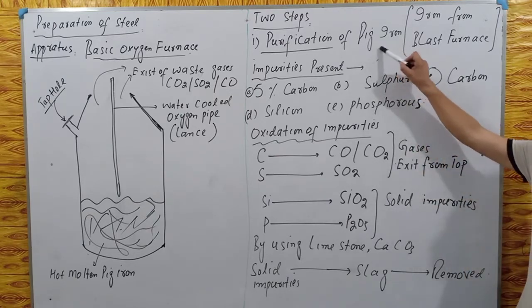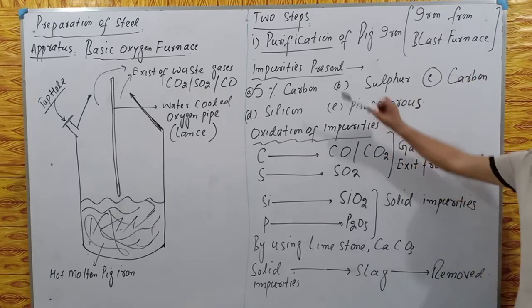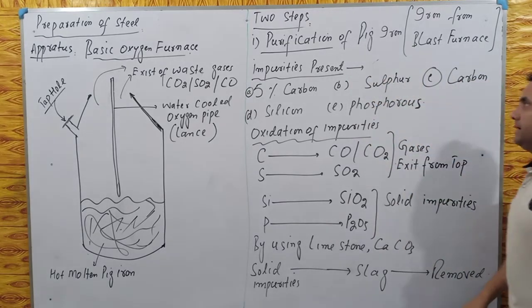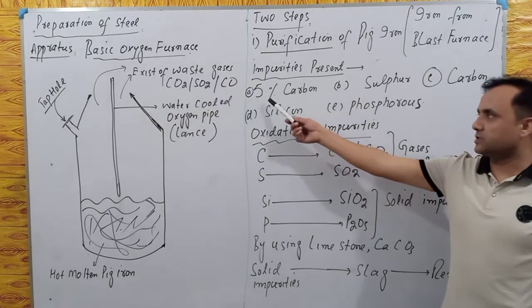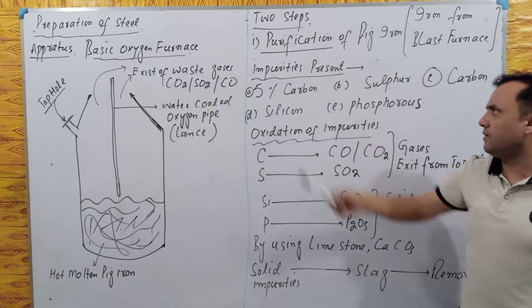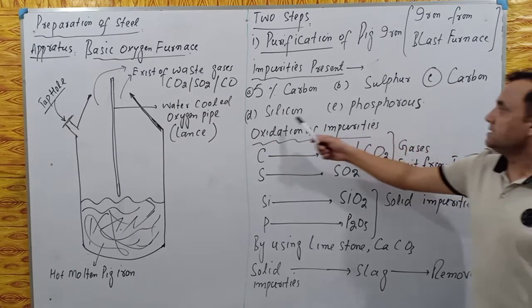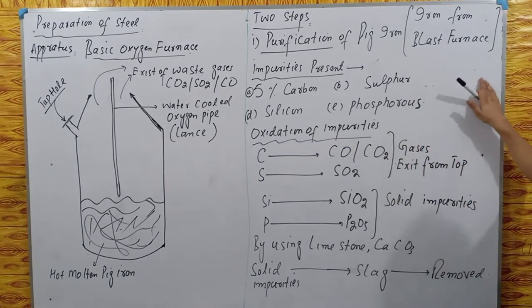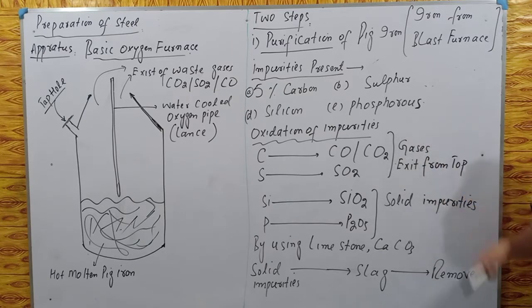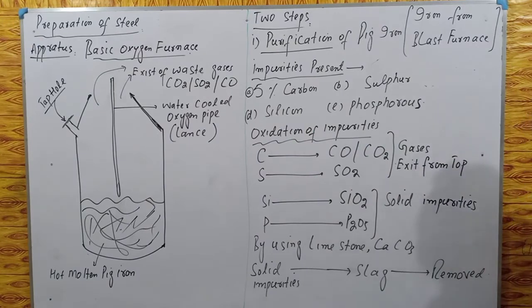Pig iron is a very low grade iron with maximum impurities. The common impurities present in pig iron are carbon (about 5%), sulfur, silicon, and phosphorus. These four — carbon, sulfur, silicon, and phosphorus — are the common impurities present in pig iron.